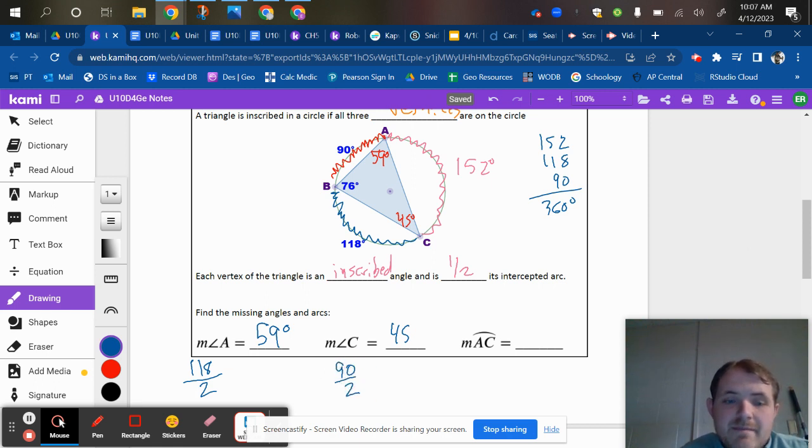And we found that the measure of arc AC, again, that's a minor arc because it's less than 180. And it's only got those two letters is 152. And that comes from 76 times 2, which is 152.